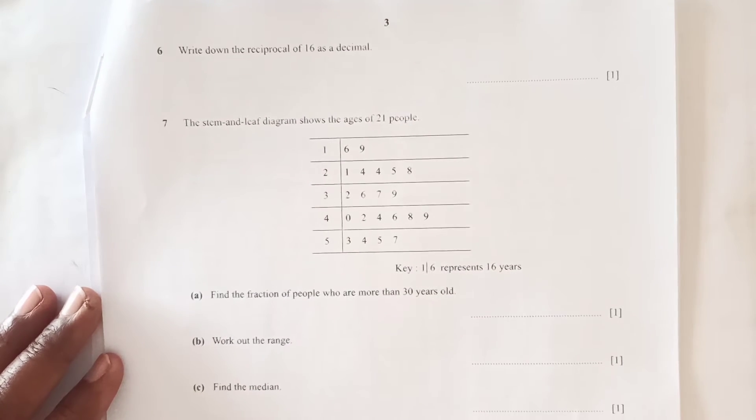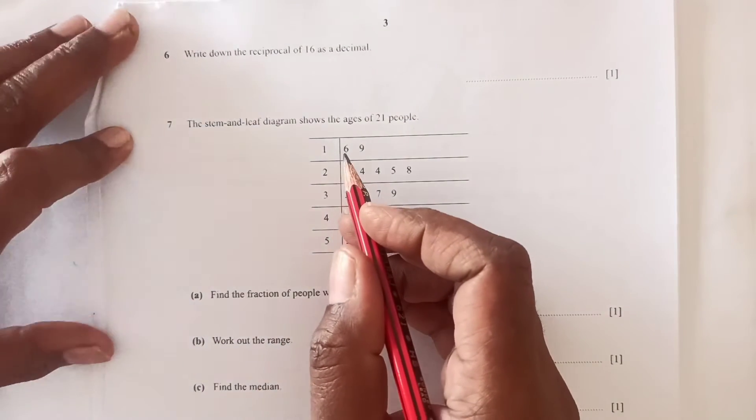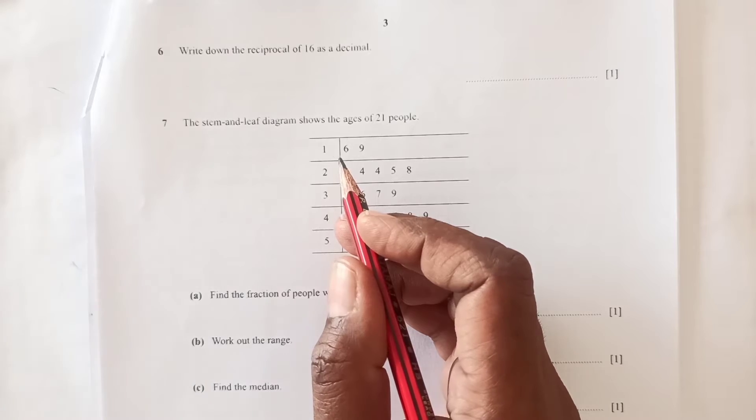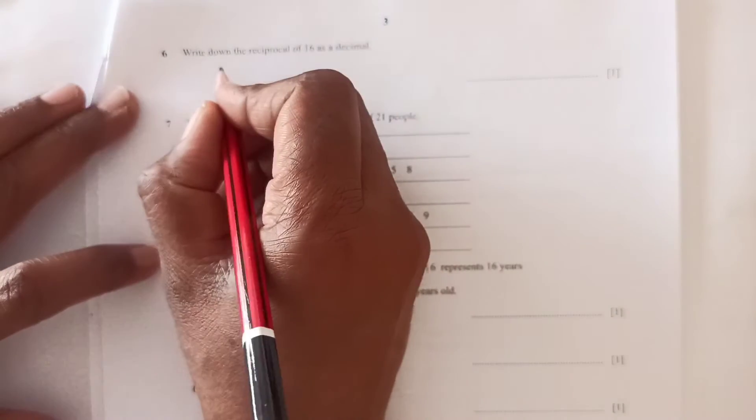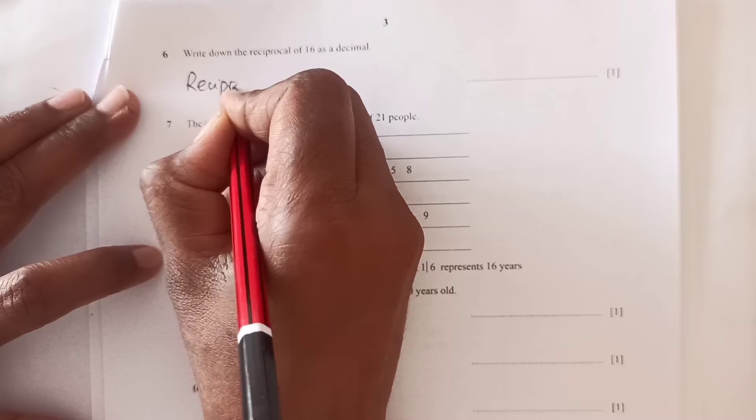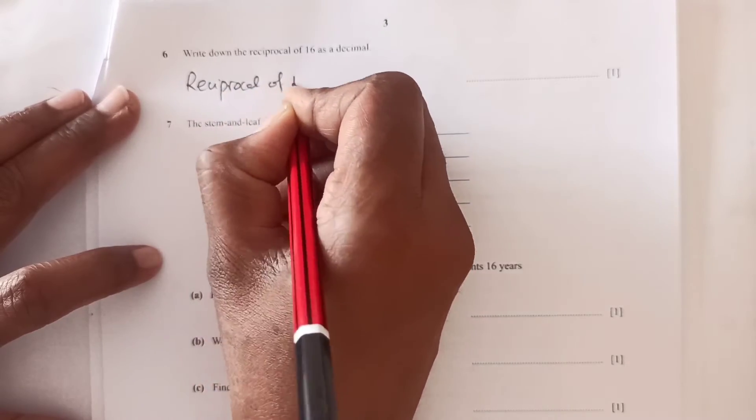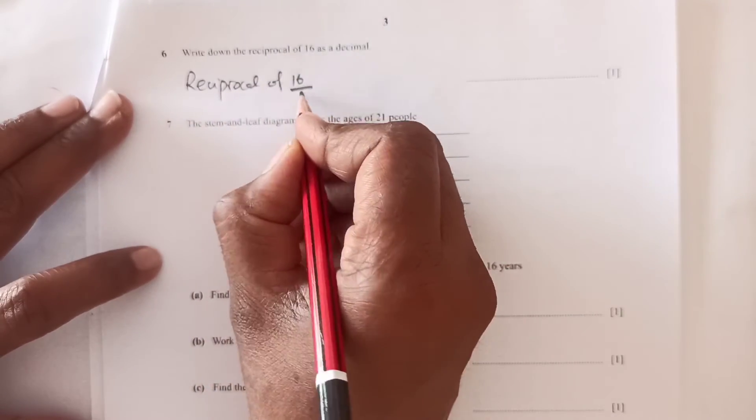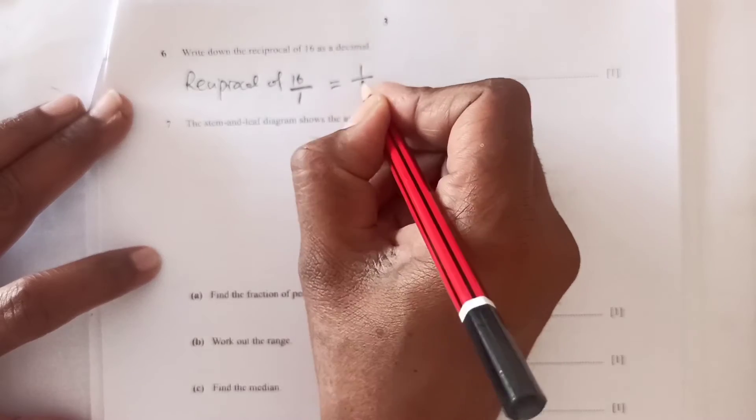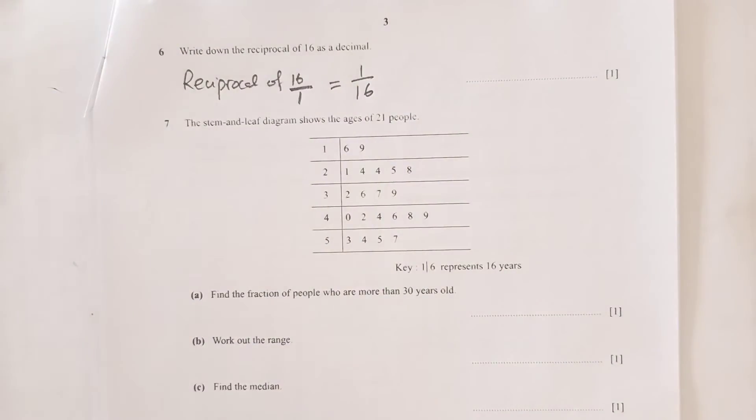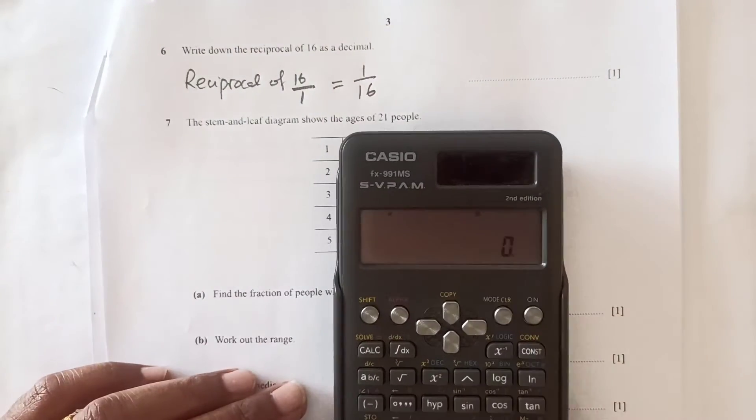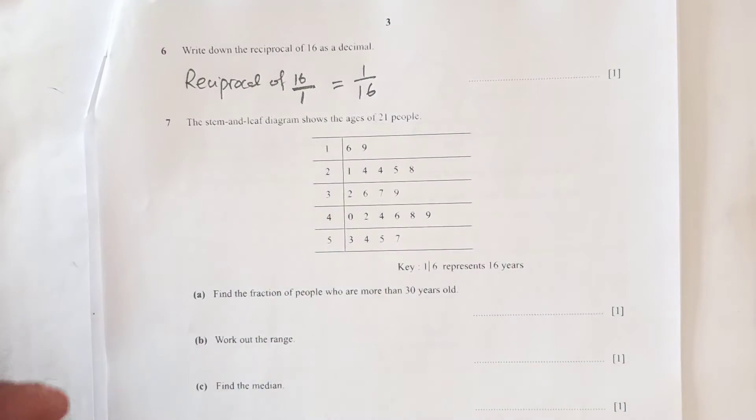Question 6: write down the reciprocal of 16 as a decimal. Reciprocal of 16 is 1 over 16, so 1 divided by 16 is 0.0625.